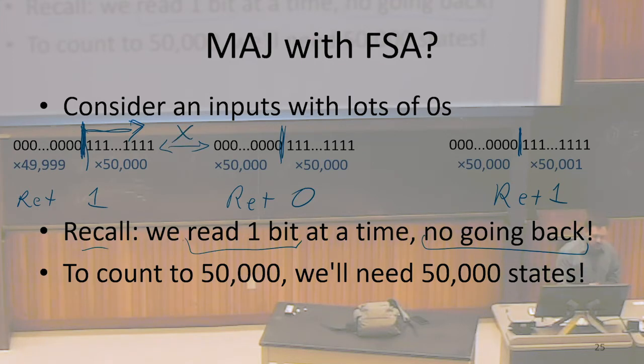If I couldn't distinguish when I had read 49,999 zeros versus 50,000 zeros before looking at the same number of ones, if I couldn't distinguish those two situations, then I'm going to get the wrong answer sometimes, which means I didn't actually implement my function. I implemented some other function instead.